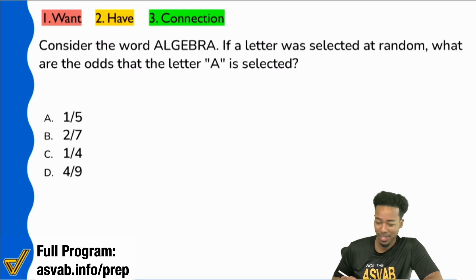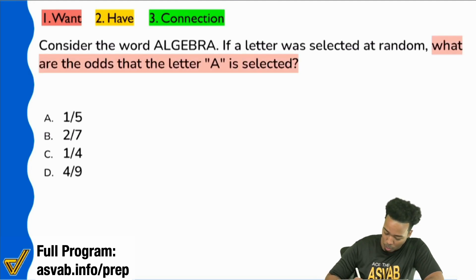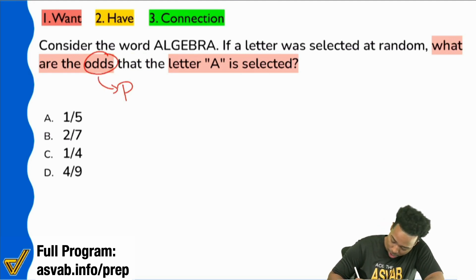When it comes to anything math related, no. So yeah, we have the word probability here, but it didn't actually say probability. It said another keyword that gives away probability automatically. And it's this: what are the odds that the letter A is selected? When you say what are the odds, that is going to be probability.